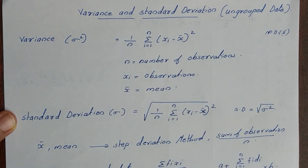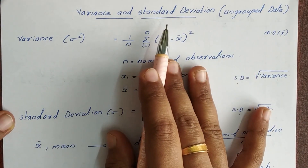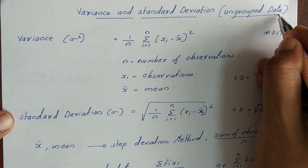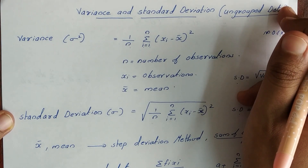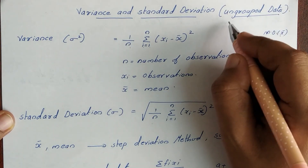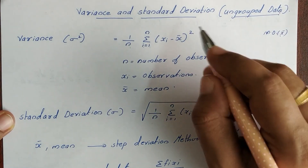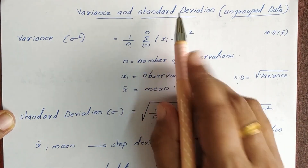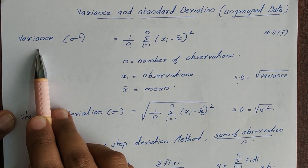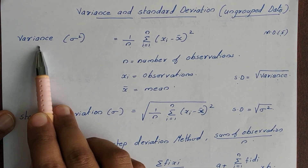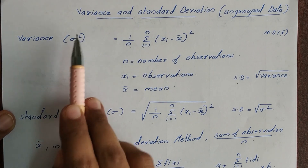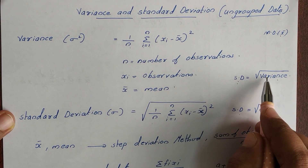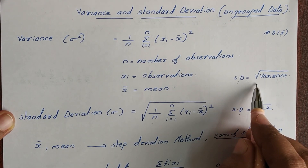What is standard deviation? We will learn this using grouped data and ungrouped data. For ungrouped data, standard deviation involves the variance. The variance is denoted as sigma squared, and the standard deviation is the square root of the variance.